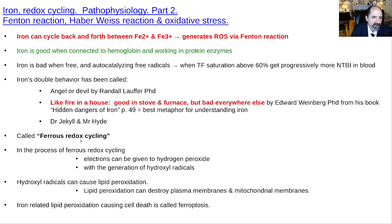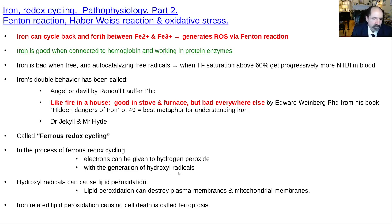Ferrous redox cycling — ferrous for iron, redox for reduction-oxidation reaction, cycling going back and forth — generates electrons that produce hydroxyl radicals, which are very damaging to the human body. They can undergo lipid peroxidation, trashing our plasma membranes and mitochondrial membranes. There's even a type of cell death due to iron-related lipid peroxidation called ferroptosis.